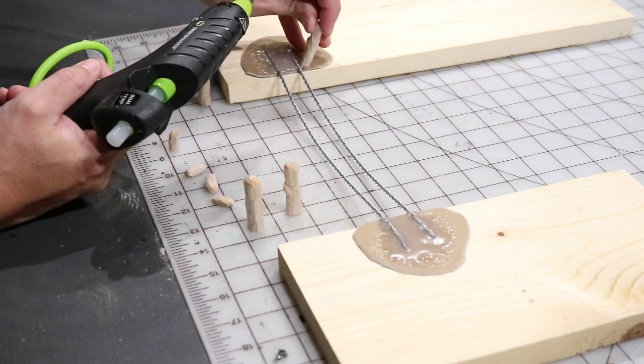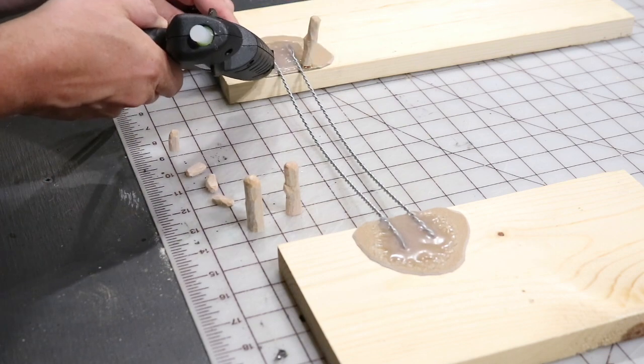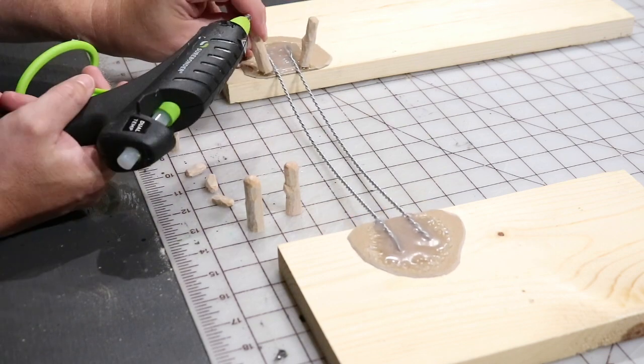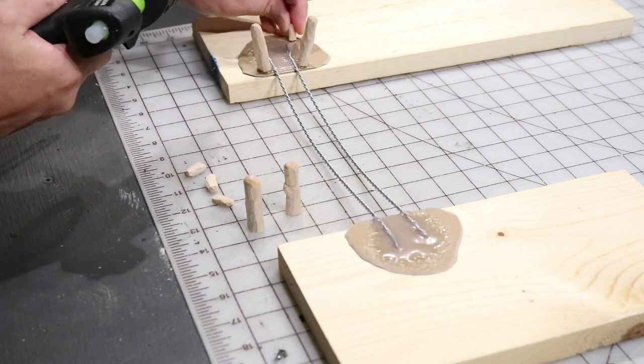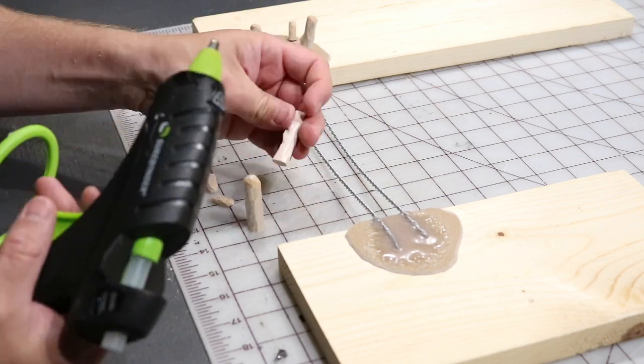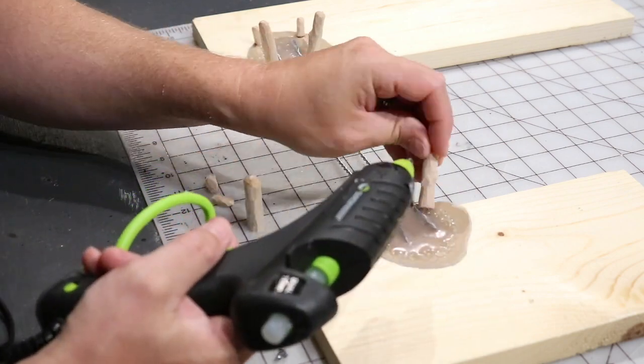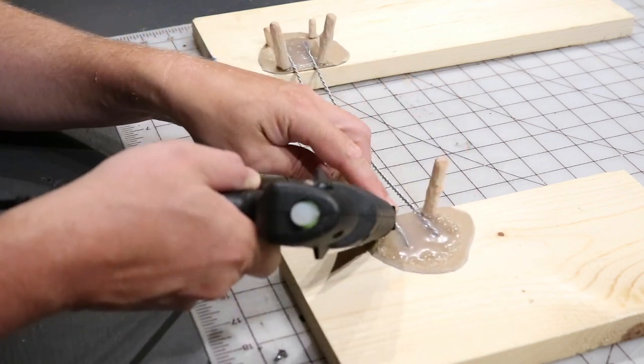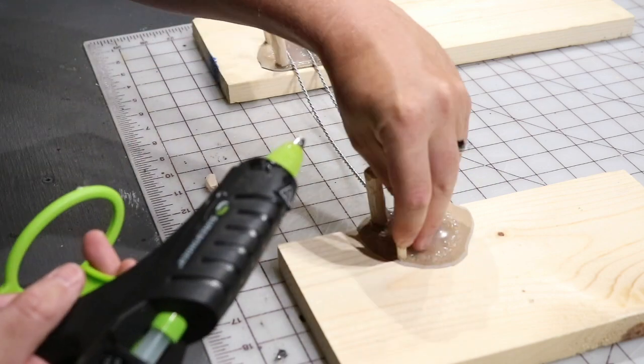Using some hot glue, just gluing those poles on. We have the larger poles, which will be the uprights for the ropes for the bridge, and then kind of the anchor poles for the backside of the bridge as well.